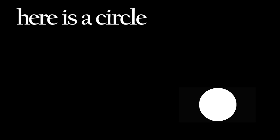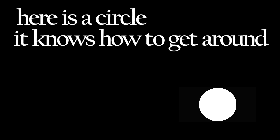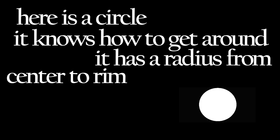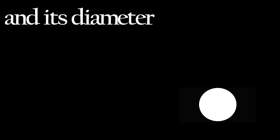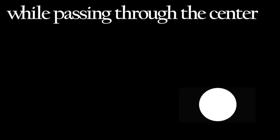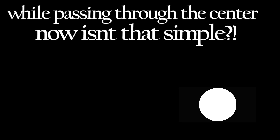Here is a circle, it knows how to get around. It has a radius from center to rim, and its diameter's a line that goes from side to side while passing through the center — now isn't that simple.